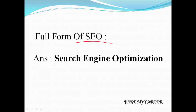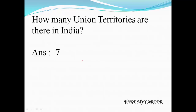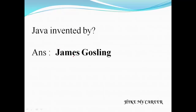First question: full form of SEO — answer is Search Engine Optimization. Next question: how many players are there in Kabaddi? Answer: 7. Next question: how many Union territories are there in India? Answer: 7. Next question: who invented Java? The inventor of Java is James Gosling.